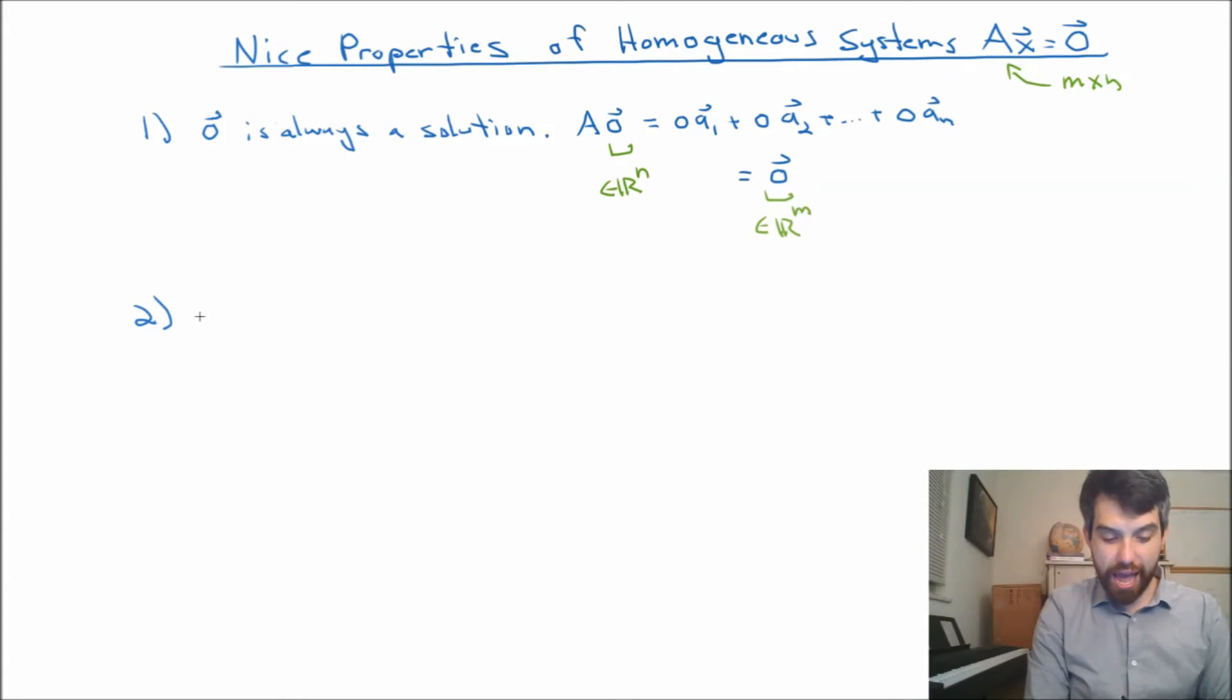Next property. I want to suppose that I have two different solutions. I'm going to call them x1 and x2, and both of them are two different solutions to the homogeneous. Well, then I can do all sorts of things. For instance, suppose I took the sum of these two. I took Ax1 + Ax2. So I've got two solutions that live in the homogeneous, and I add them together, and then I say, well, what does that solve?